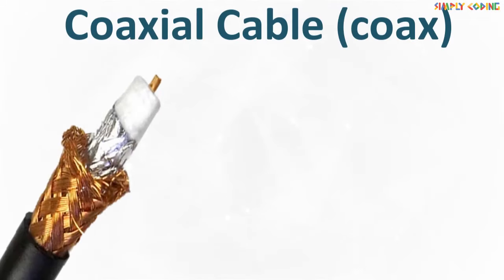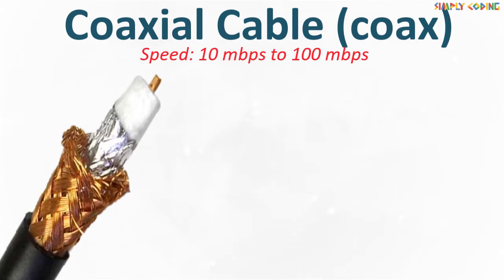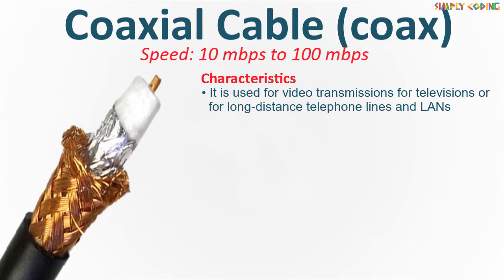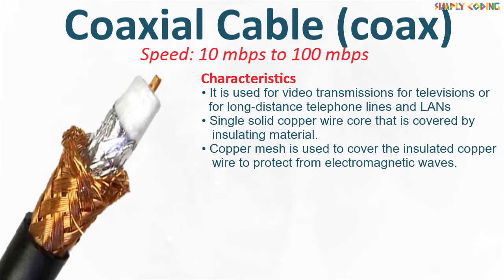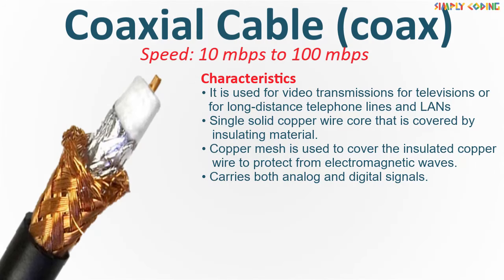Next is coaxial cable, also termed as coax. The data transmission speed is around 10 to 100 Mbps. It is used for video transmissions for televisions, long distance telephone lines, and LANs for voice and data transmission with very high frequency. It is made up of a single solid copper wire core covered by insulating material, and a copper mesh is used to cover the insulated copper wire. It also protects the cable from noise such as electromagnetic waves. It can carry both analog and digital signals.